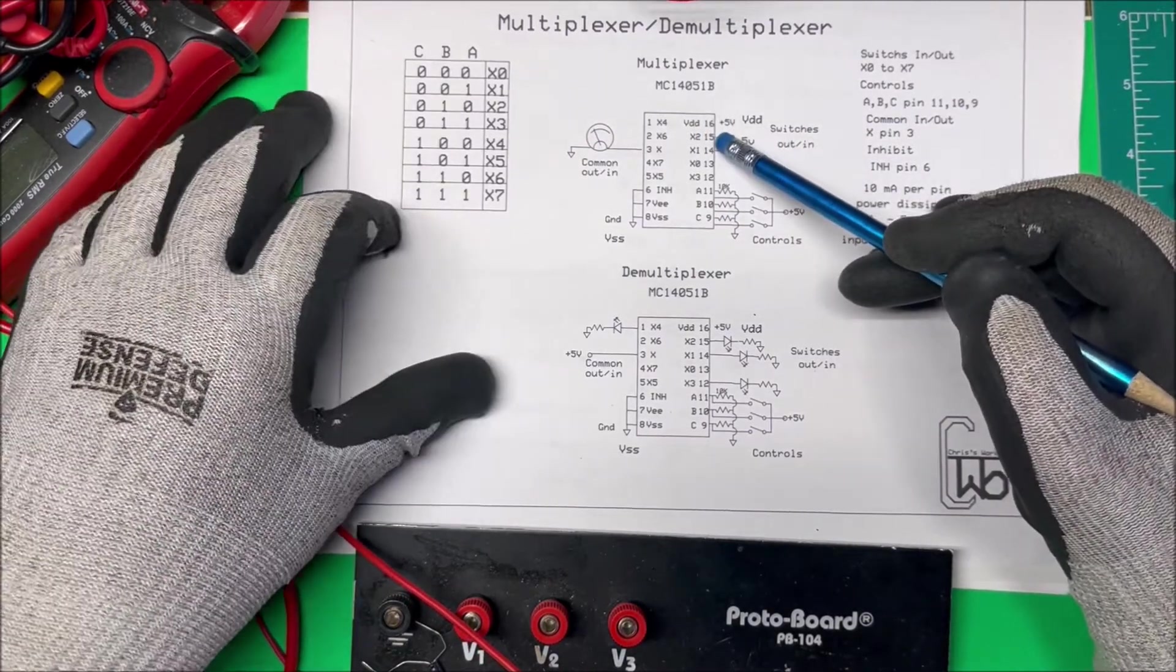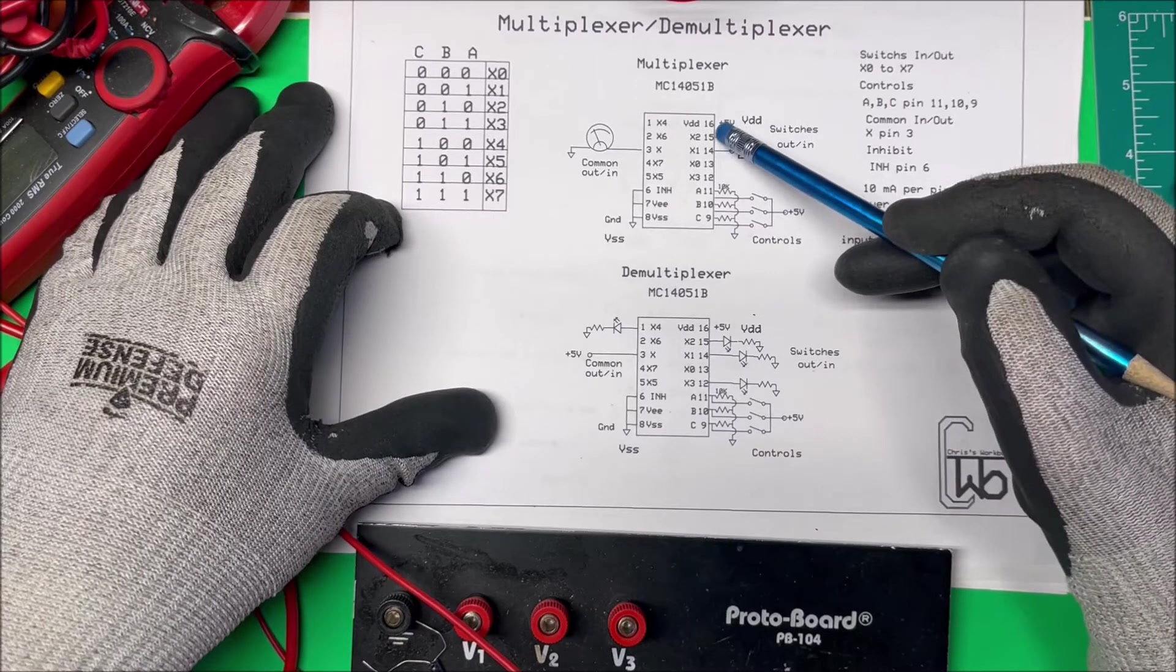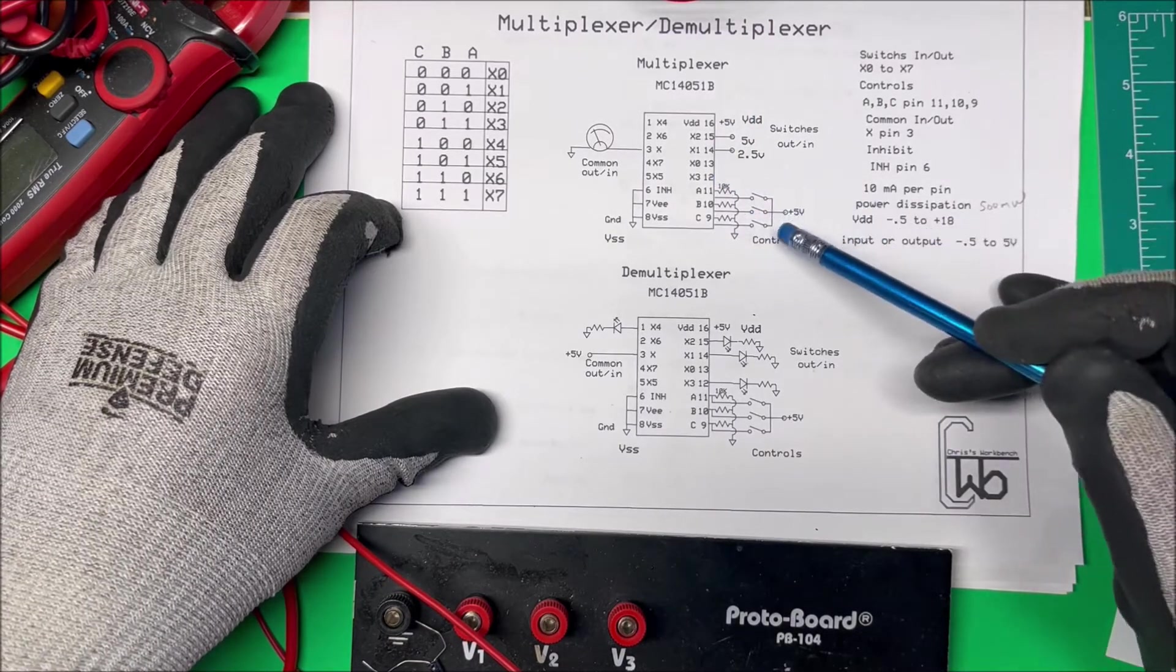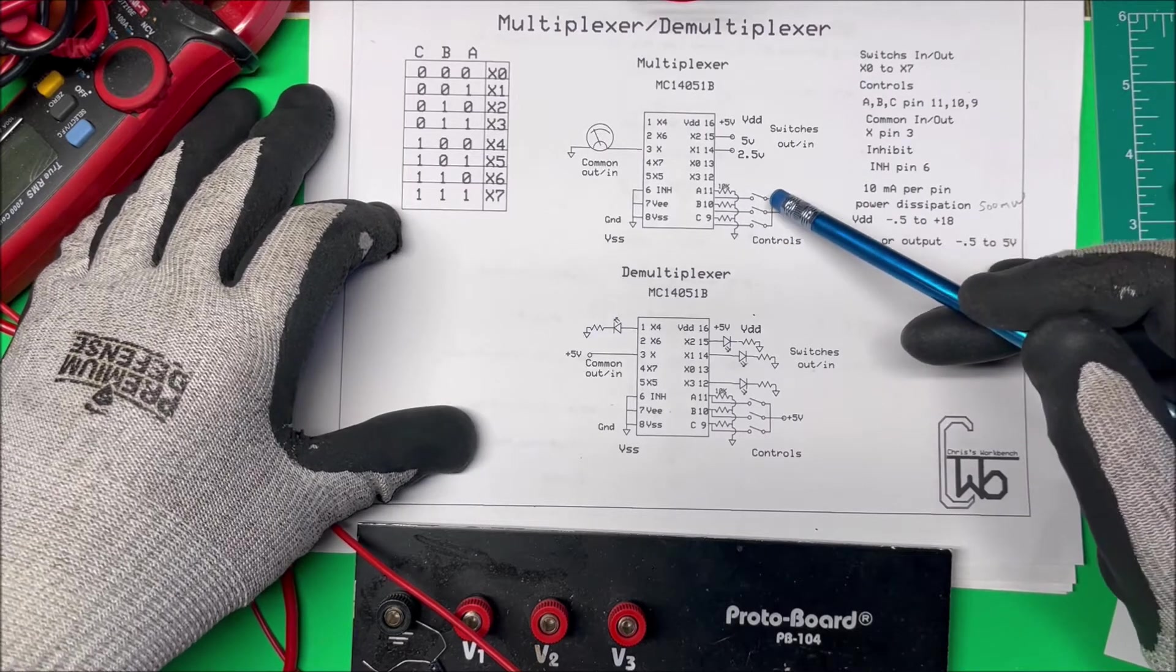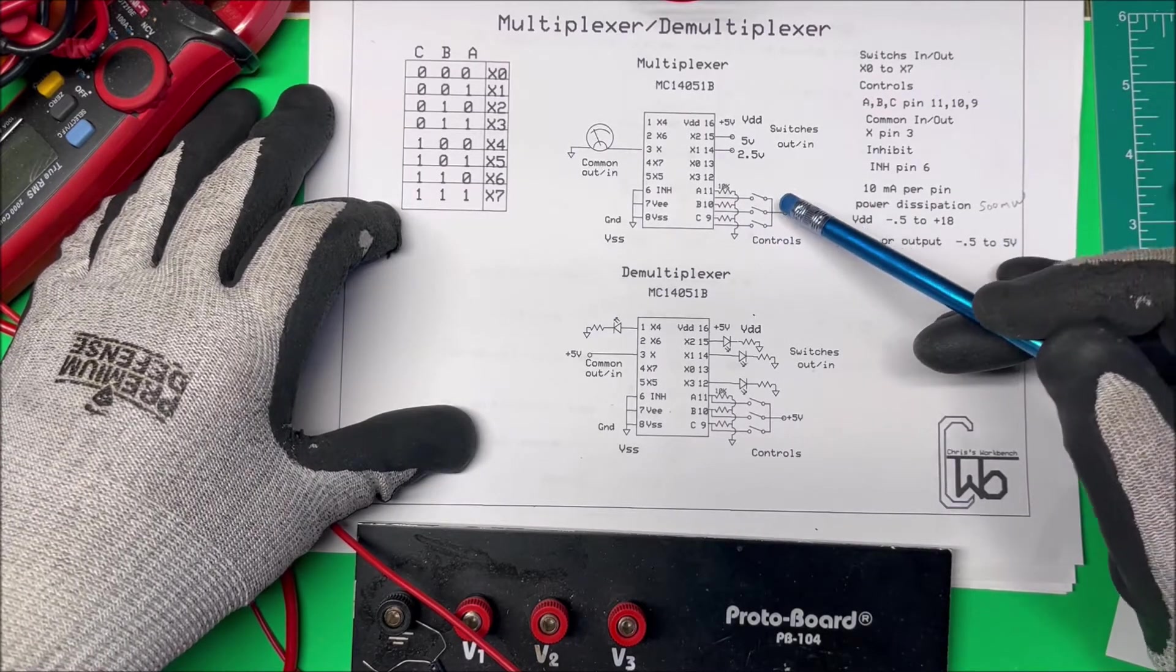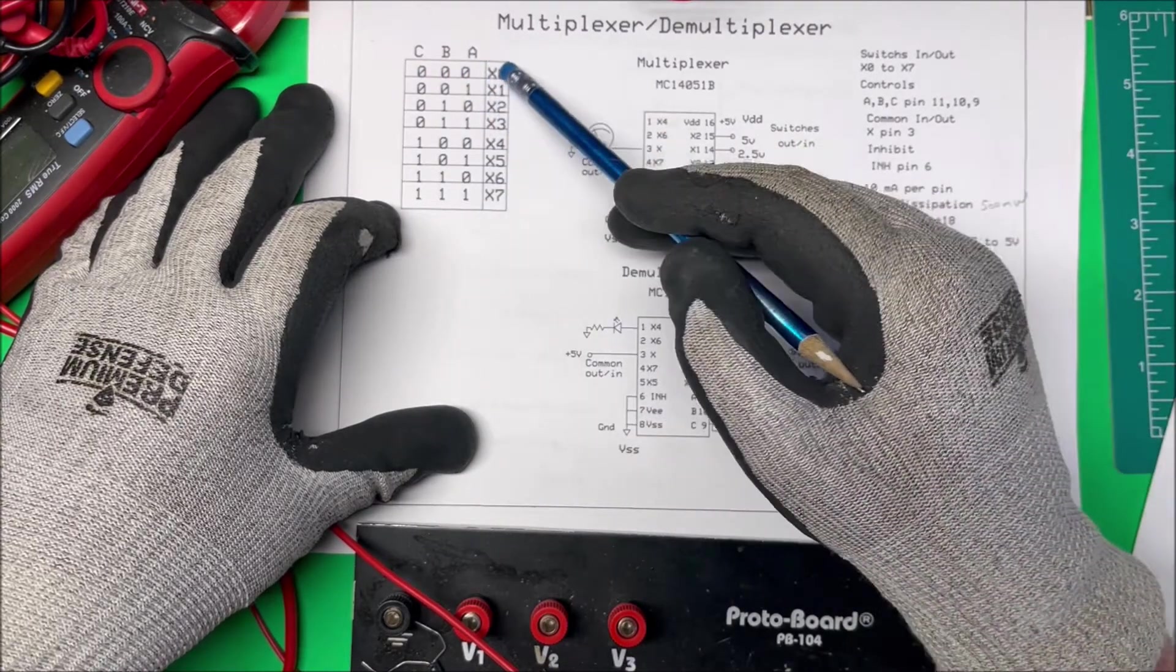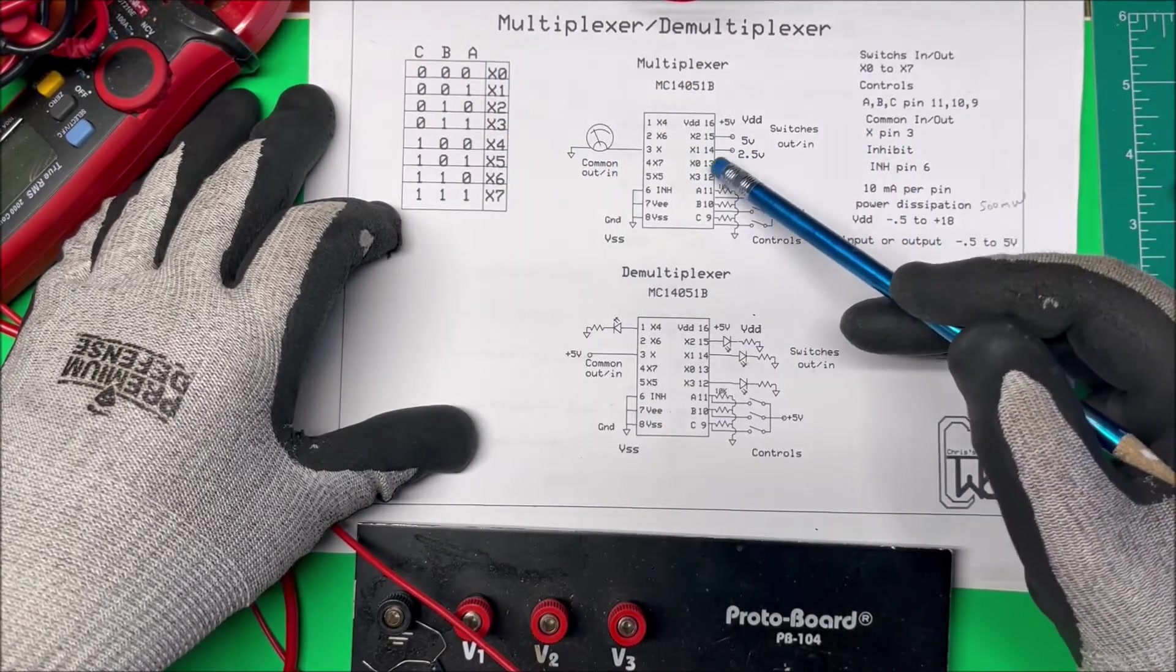So I'm going to use a multiplexer to do that. I'm going to put those values into these switches here, and these control pins over here. As I switch these control pins it's a binary number, so over here if they're all open, X0 is going to be on.